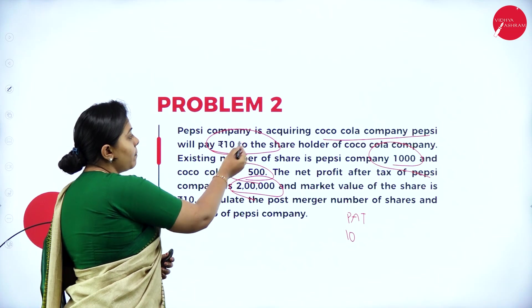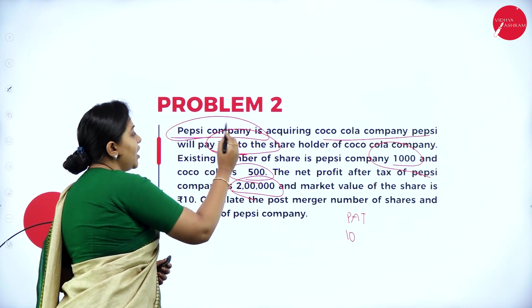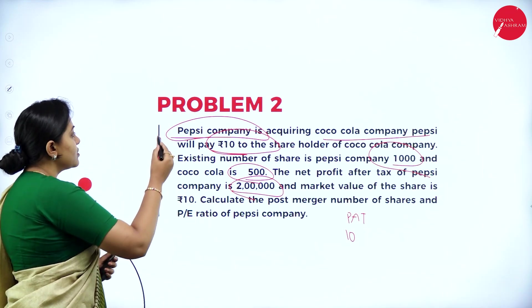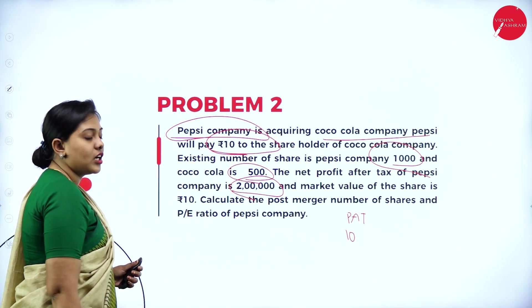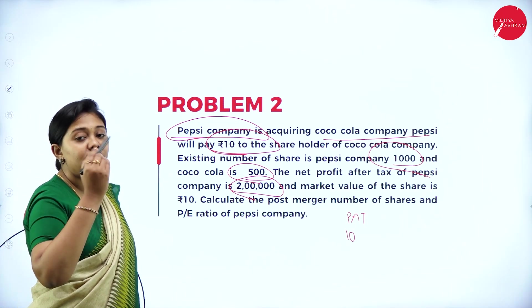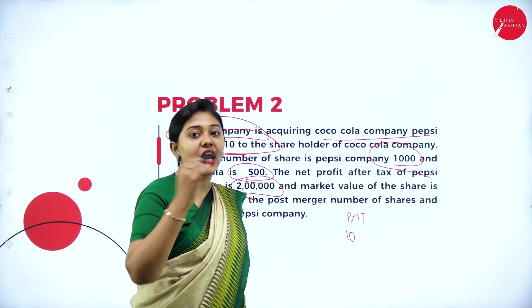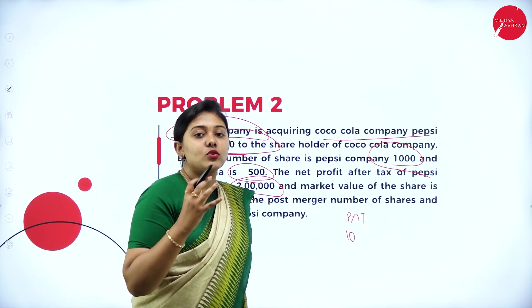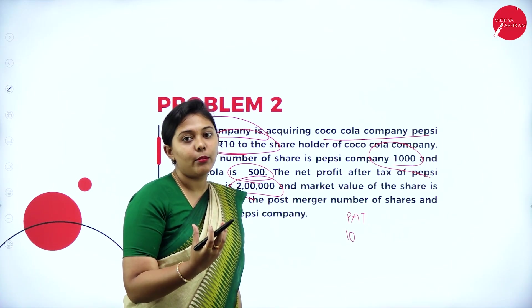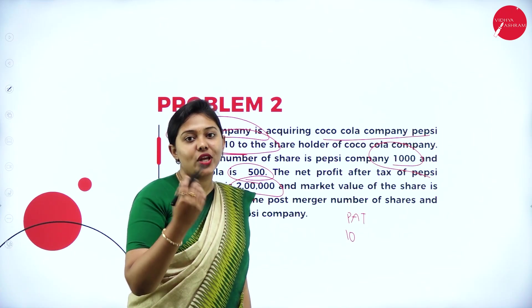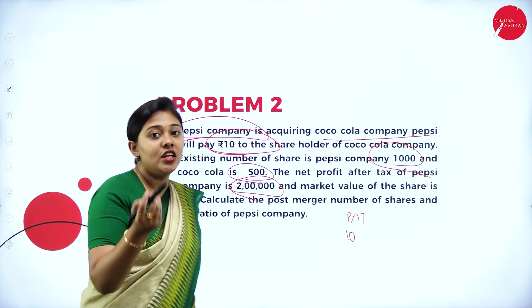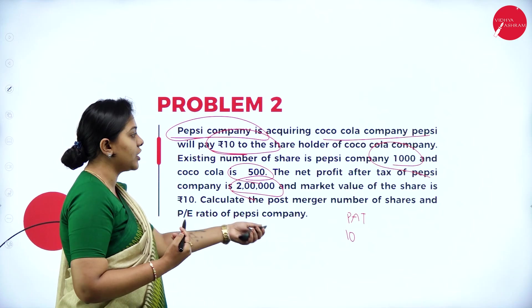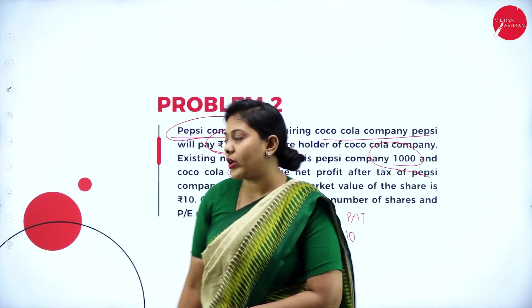Pepsi company is acquiring, so Pepsi is the acquirer company and Coca-Cola is the target company. After the merger and acquisition happens — after Pepsi acquires Coca-Cola — we need to calculate the total post-merger number of shares, and then calculate the price-to-earnings ratio of Pepsi company.